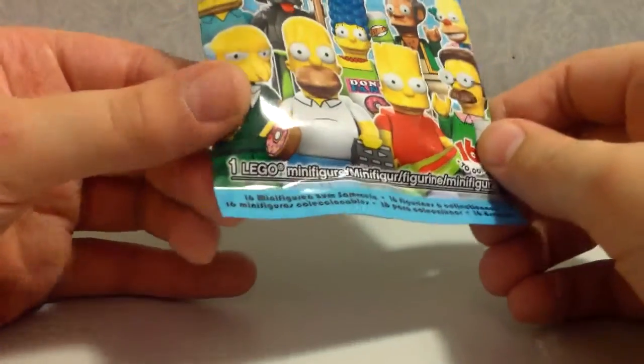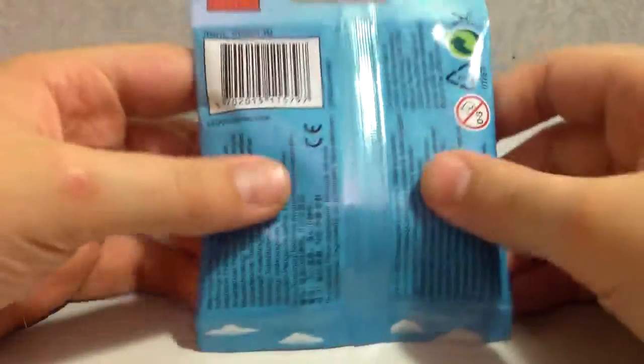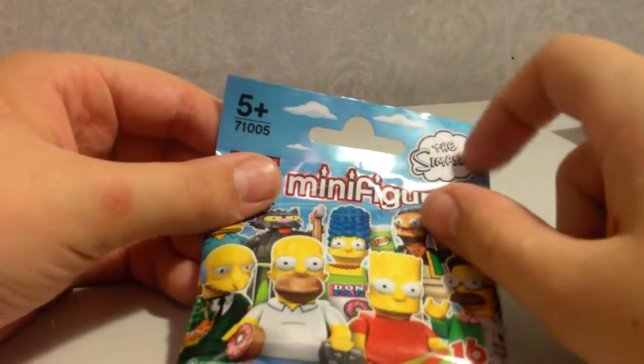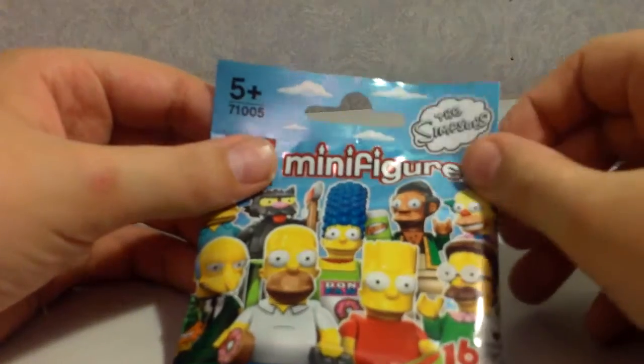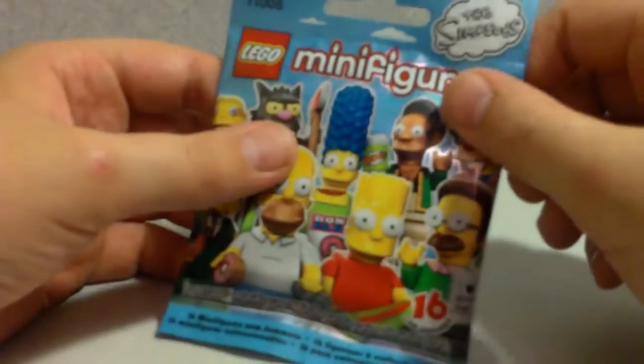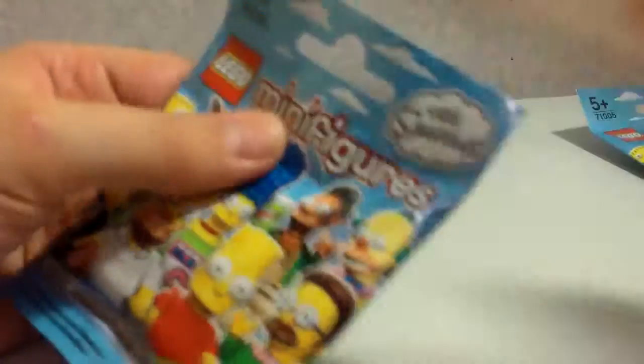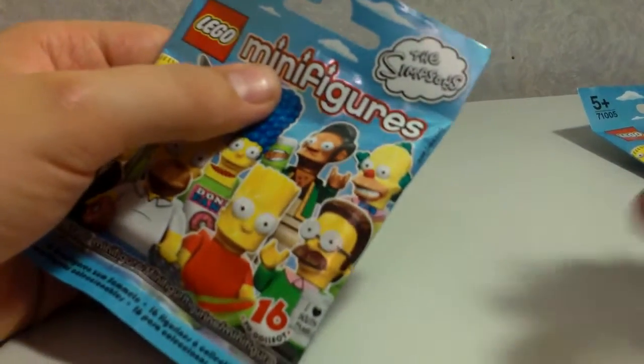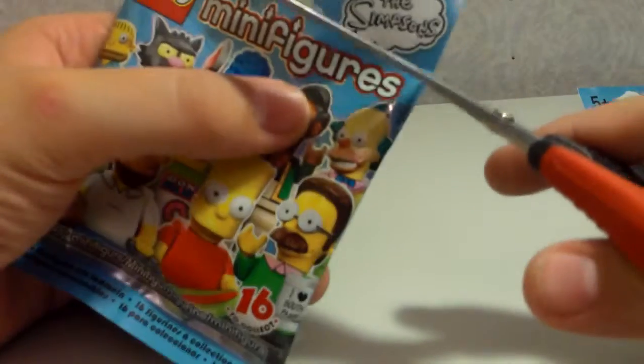You've got the minifigures logo there and then nine of the cool characters on the front, 16 to collect. I like this kind of metallic light blue sort of color to the packaging with the kind of Simpsons clouds in the background, very nice. Let's open the first pack and see what we get.